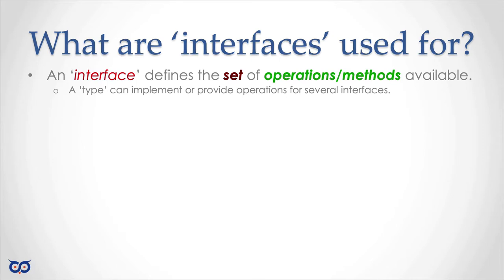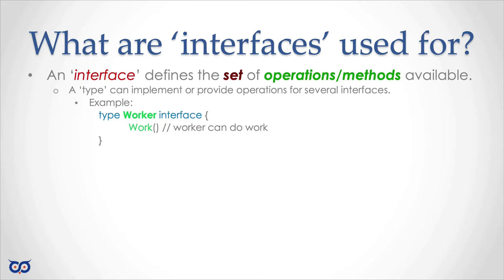A type can implement or provide the methods for one or more interfaces. For example, if we have a type called 'worker' as our interface, and we define a method called 'work', that means anything that implements this interface 'worker' must have this exact method signature. Given an object or value that implements the interface worker, we can call the method 'work'.